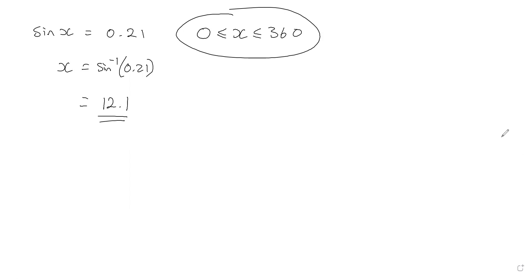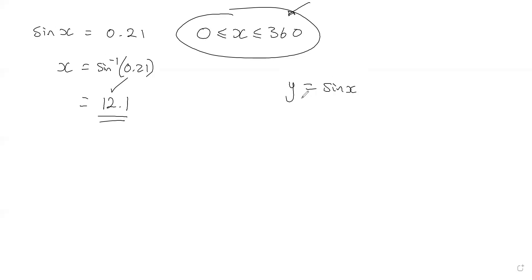No, you are not done. What the range is actually saying is: give me every answer between 0 and 360. Obviously 12.1 goes in there and that's definitely a correct answer, but can I have the rest of them? Because what you need to understand about sine x is it actually has an infinite number of solutions.